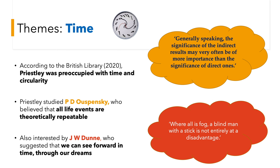Below that is a quote from J.W. Dunn, who suggested that we can see forward in time through our dreams. He was more of a contemporary of Priestley — also British, an aeronautical engineer and philosopher. He said, 'Where all is fog, a blind man with a stick is not entirely at a disadvantage.' In An Inspector Calls, we do feel as an audience that for a large majority of the play, we are in a fog with the characters. There are very interesting elements from these influences seen in the theme of time in the play.